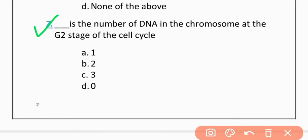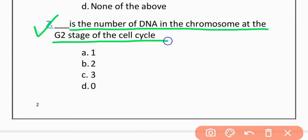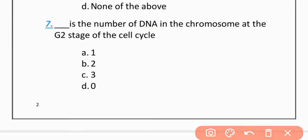MCQ 7: What is the number of DNA molecules in chromosomes at the G2 stage of the cell cycle? Option A: One. Option B: Two. Option C: Three. Option D: Zero. The correct option is B — Two.